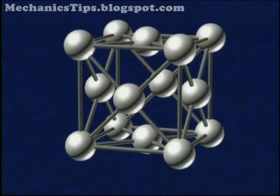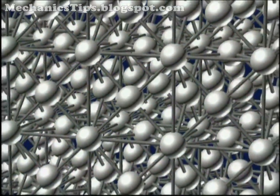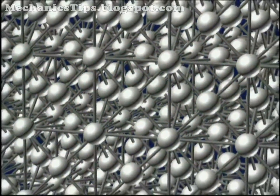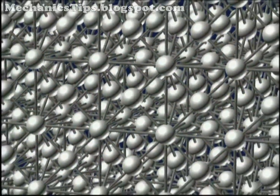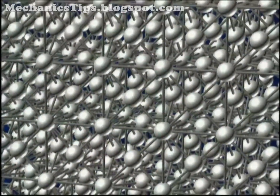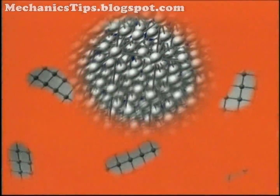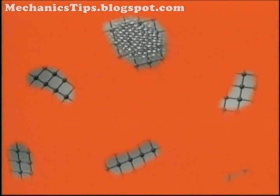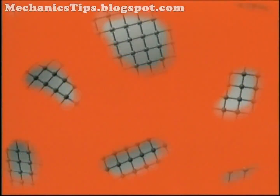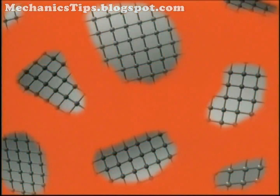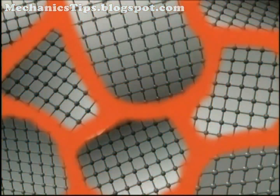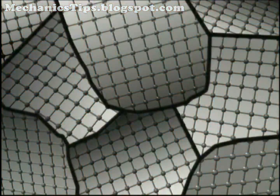These crystal structures grow uniformly in all directions within each developing crystal. As the metal cools, these crystals are confined by the adjacent developing crystals, forming grains.